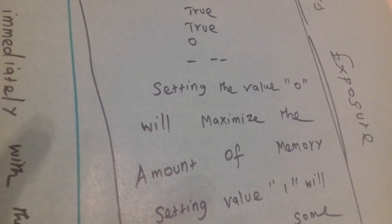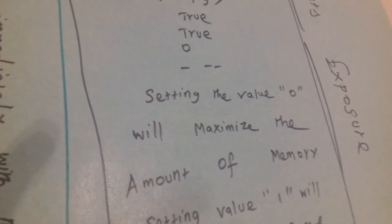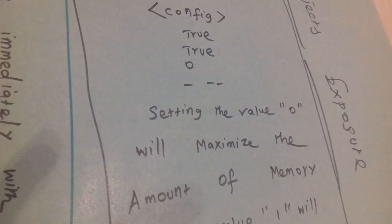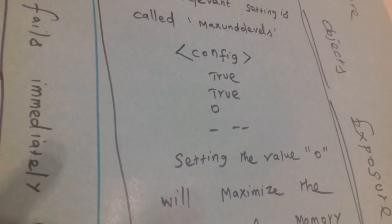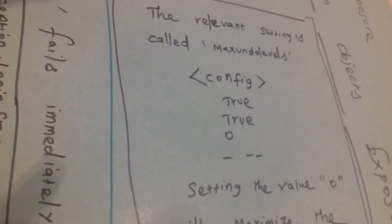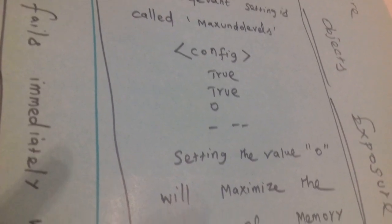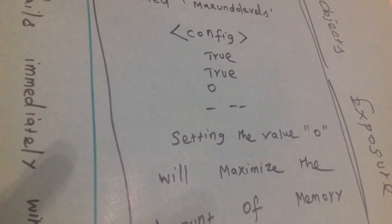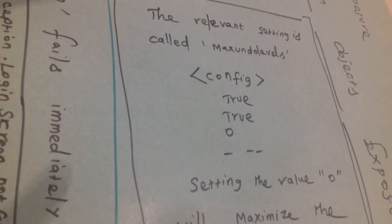Two ways you can avoid out-of-memory exception: using garbage collection GC.Collect forcing, and one more way is maximum undo levels setting 0 as the value. This way we can avoid memory consumption.